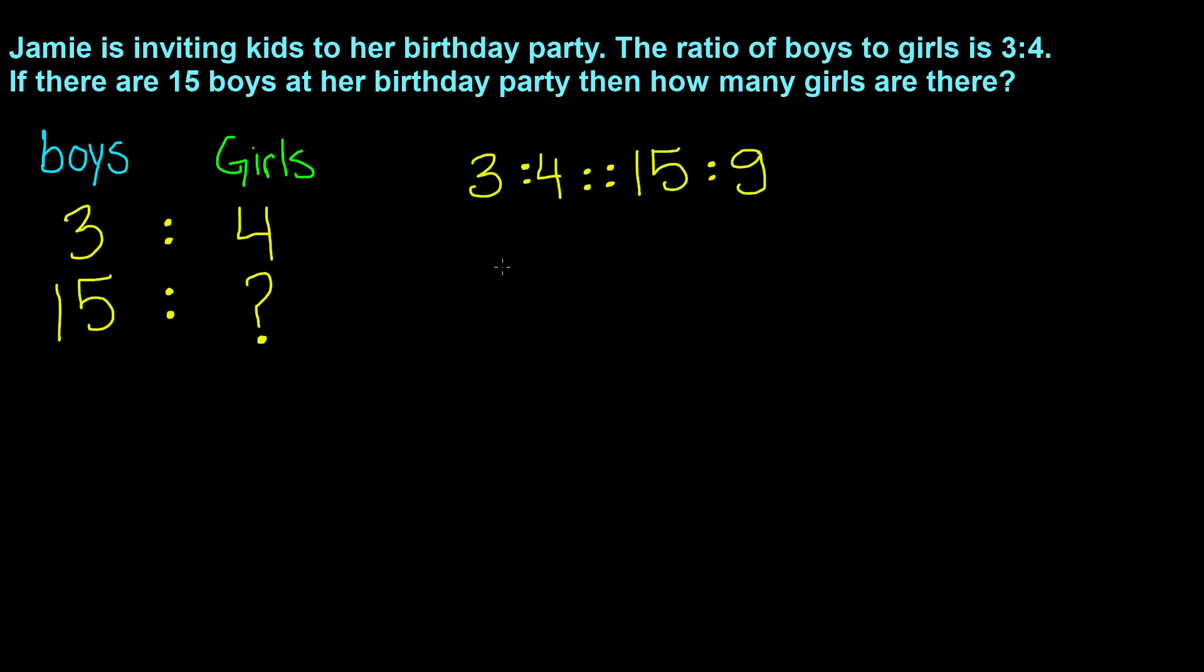Now, we put these ratios into fraction form. 3 to 4 becomes 3 over 4 and 15 to g becomes 15 over g.